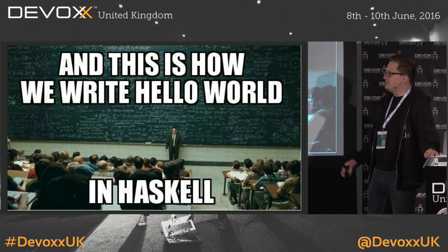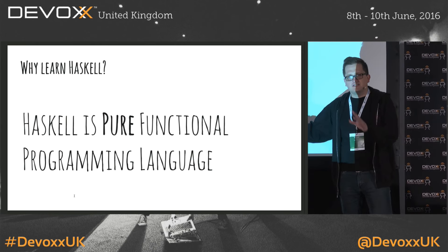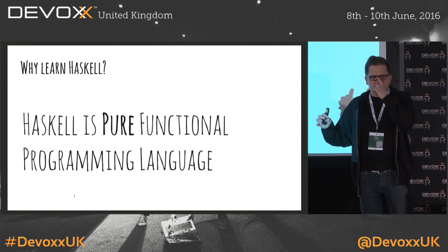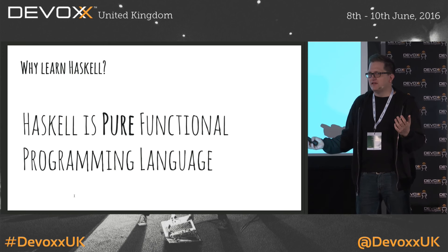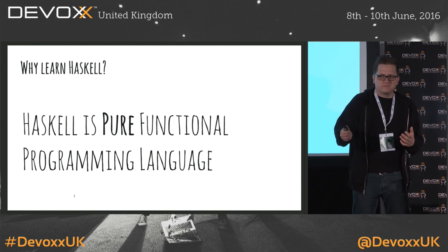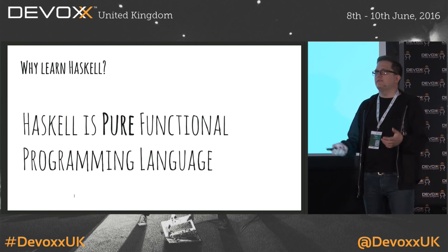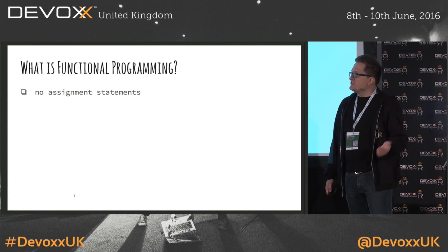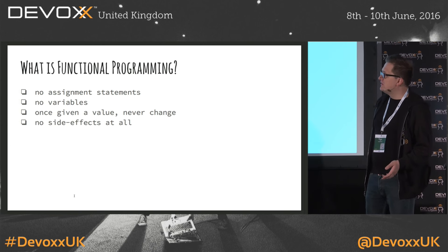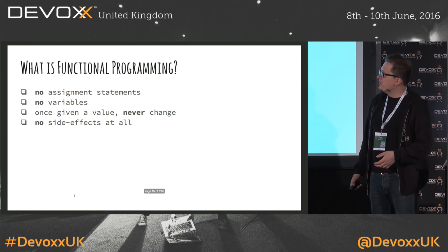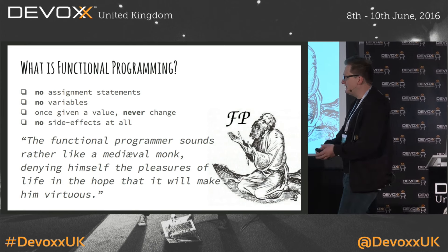The problem with Haskell is the paradigm. Because Haskell is a pure functional programming language. What does that really mean? Can anybody give me an explanation of what functional programming is? It's really hard to define. Functions are first-class. The things I read on the Internet are basically: no assignments, no variables — once given a value, things will never change — immutability, no side effects at all. I once read that a functional programmer sounds slightly like a medieval monk, denying himself the pleasures of life in hope that it will make him more virtuous.